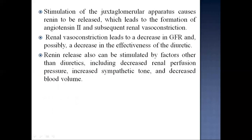Stimulation of the juxtaglomerular apparatus causes renin to be released, leading to formation of angiotensin 2 and subsequent renal vasoconstriction. Renal vasoconstriction leads to a decrease in GFR and possibly a decrease in diuretic effectiveness. Renin release can also be stimulated by factors other than diuretics, including decreased renal perfusion pressure, increased sympathetic tone, and decreased blood volume.